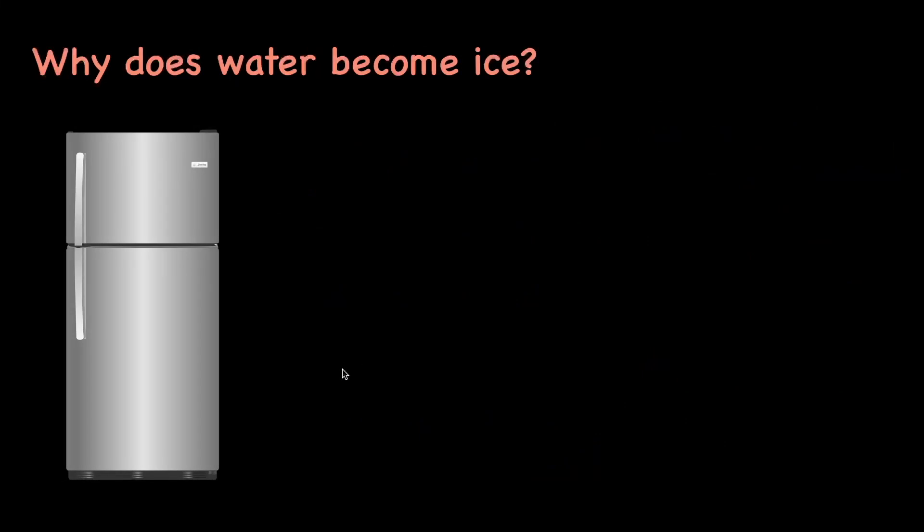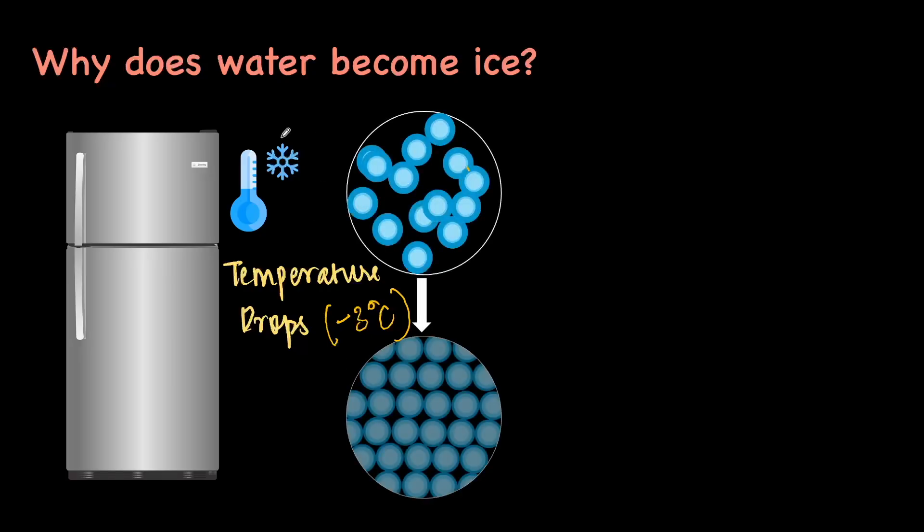But why does water become ice when kept at low temperatures? Notice that in the freezer, the temperature reduces, or the temperature drops and goes all the way to maybe minus two, minus three degrees. Inside the freezer, when it keeps getting colder and colder, what effectively happens is that the temperature or the heat from these particles will start to move away. They start to lose the heat. And as a result of which, whatever energy is there, the energy also starts to go. So the particles that were earlier slightly moving around at room temperature no longer have the energy at minus two, minus three degrees, which is why they start to lock themselves up into fixed positions.